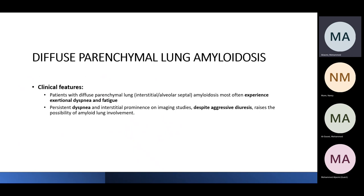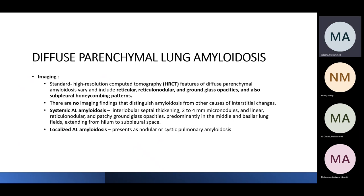Clinically, patients with diffuse parenchymal amyloidosis typically present with exertional dyspnea and fatigue. Most patients are already known to have systemic amyloidosis, or the diagnosis may be new. These patients are often short of breath despite aggressive diuresis, so it is important to differentiate between cardiomyopathy due to amyloidosis and primary lung involvement. On high-resolution CT scan, findings can include reticular opacities, ground-glass opacities, and subpleural honeycombing, though these are non-specific and can mimic other interstitial lung diseases.